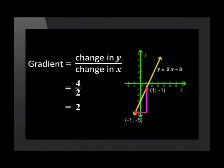You find how much you have moved on the y-axis. That's the change in y. And divide this by how much you have moved on the x-axis. That's the change in x. So here we get 4 and here we get 2. 4 divided by 2 gives us a gradient of 2. Good!